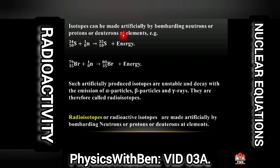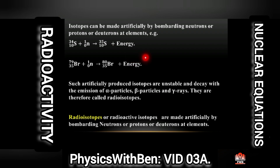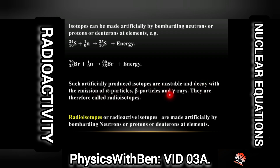Isotopes can be made artificially by bombarding neutrons or protons at elements, as you can see in the examples here. Such artificially produced isotopes are unstable and decay with the emission of alpha particles, beta particles, and gamma rays.